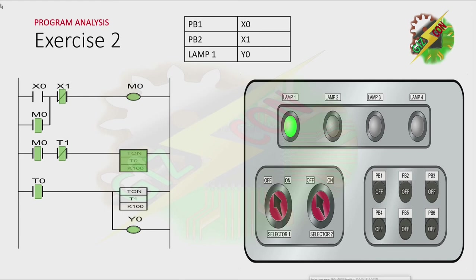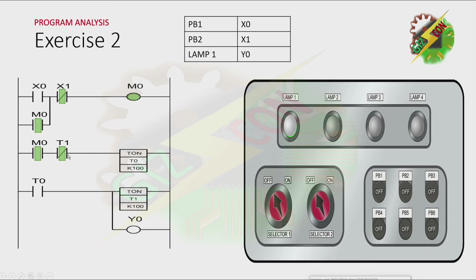After one second, T0 will be activated. Because T0 is now activated, T1 will be activated after one second. Because T1 is now activated, all the contacts of T1 will change, causing the normally closed T1 contact to open, which will deactivate T0. Because T0 is deactivated, all the contacts of T0 will go back to their initial state. Because T1 is now deactivated, all the contacts of T1 will go back to their initial state also, and T0 will be activated again. This cycle will continue unless M0 is off.